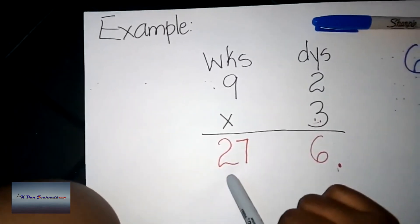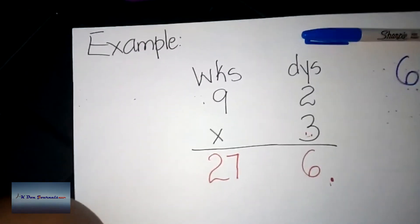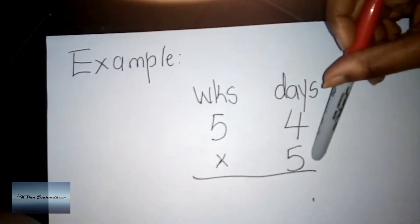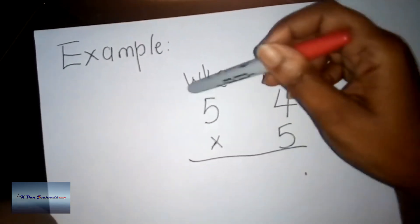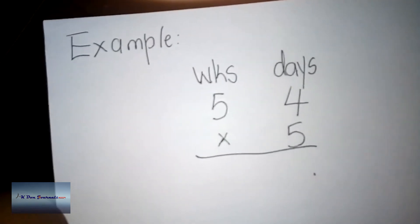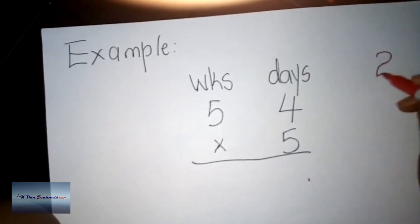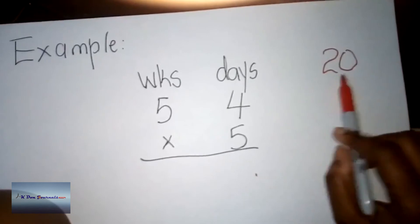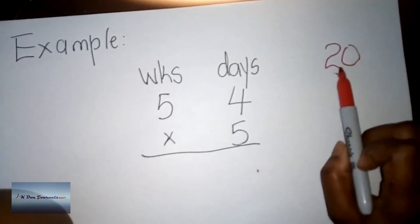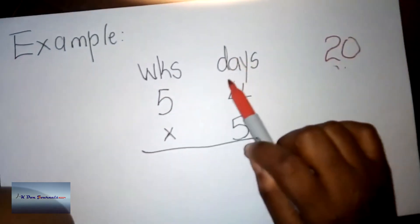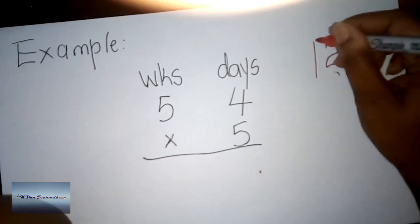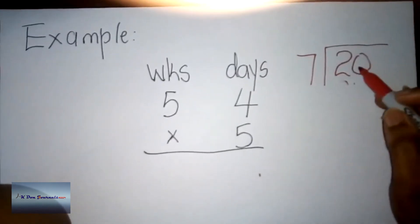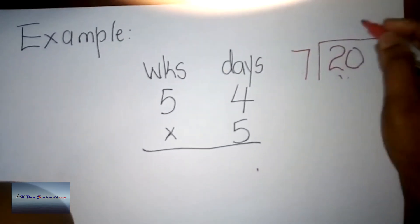Let's try one more. We have five weeks and four days multiplied by five. Again, we start with the days column before moving to the weeks. Five times four gives us 20, so I put my 20 here. Now, is 20 less than seven or more than seven? Because it is more than seven, I will have to change this 20 days into weeks and days — we divide by seven, because seven days make a week.